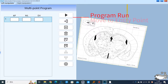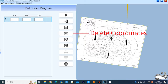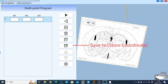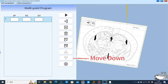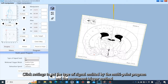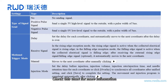In the multi-point program: Program Run moves to the entry point, allows adding coordinates, deleting coordinates, calling stored coordinates, and saving to store coordinates. Use Move Up and Move Down to reorder. Click Settings to set the type of signal emitted by the multi-point program and the movement trigger method. Check the chart for more information.